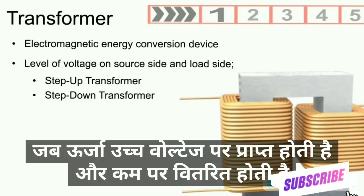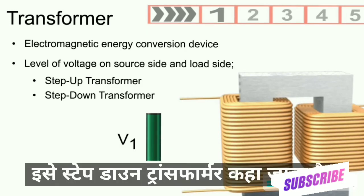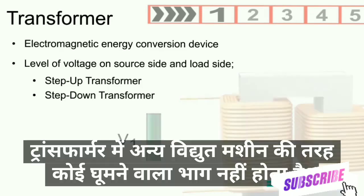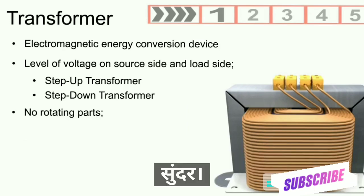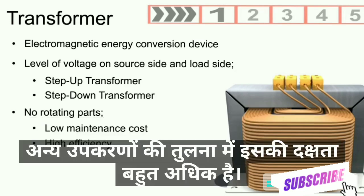Number two: step-down transformer, when the energy is received at a higher voltage and delivered at a lower voltage. A transformer has no rotating parts like other electrical machines; therefore it requires little attention, its maintenance cost is low, and its efficiency is much higher compared to other apparatus.